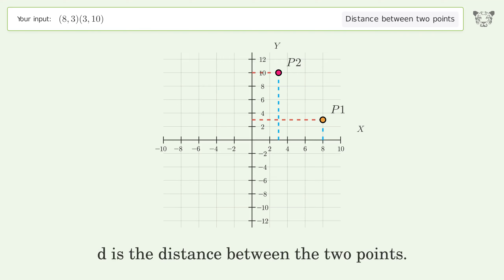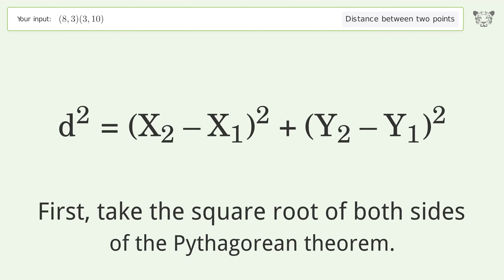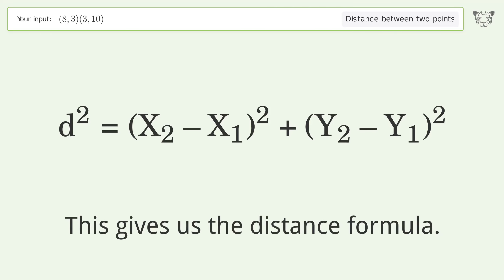d is the distance between the two points. First, take the square root of both sides of the Pythagorean theorem. This gives us the distance formula.